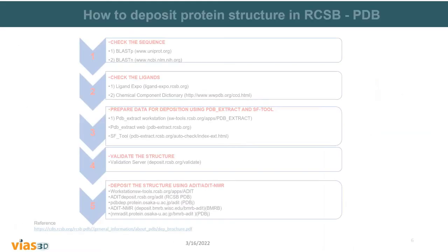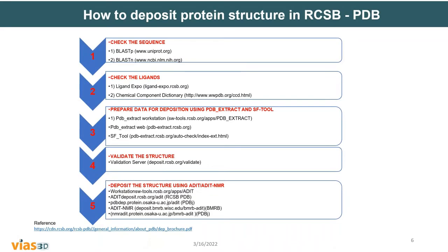Coming to how we can deposit the protein structure in the RCSB PDB: once you have predicted your structure using X-ray or NMR crystallography, there are a series of steps for deposition. First, you check the sequence using BLAST-P in UniProt or NCBI to verify whether the sequence is already existing or the structure has already been determined. If the structure is not yet determined, you are on the right path.